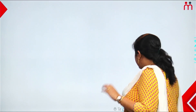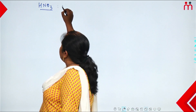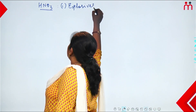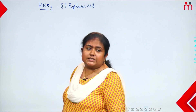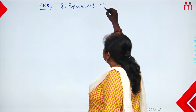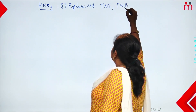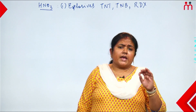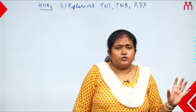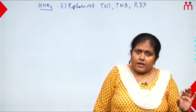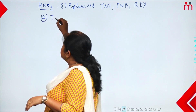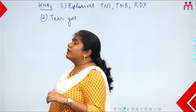Now let's discuss uses of nitric acid (HNO₃). The first use of nitric acid: it is used in manufacturing explosives. Most explosives are made from nitric acid — TNT (trinitrotoluene), trinitrobenzene, nitroglycerin, RDX — all explosive manufacturing uses nitric acid.